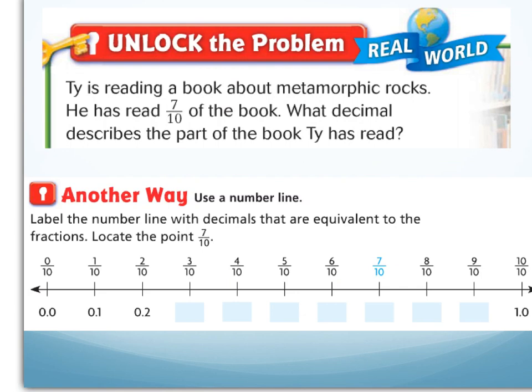It's important to be able to recognize decimal points on a number line. If I have a number line from zero to one cut into tenths, each point represents one tenth, and I can identify seven tenths by counting seven spots — one, two, three, four, five, six, seven — and recognize that as seven tenths.